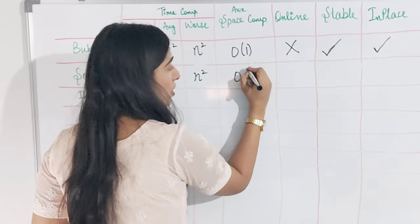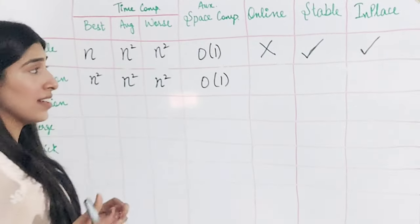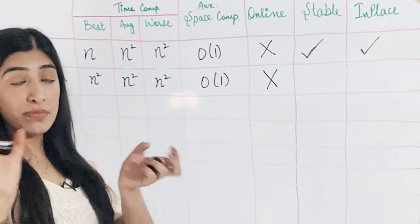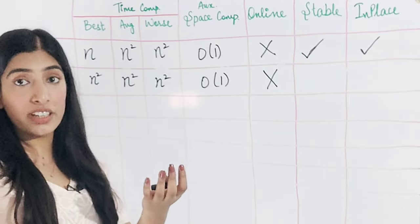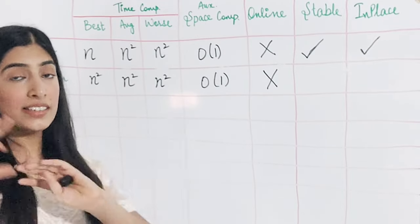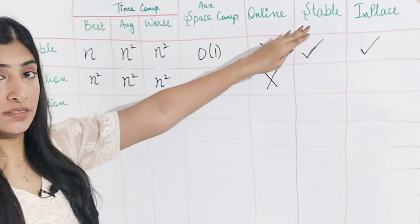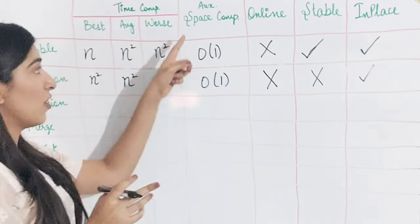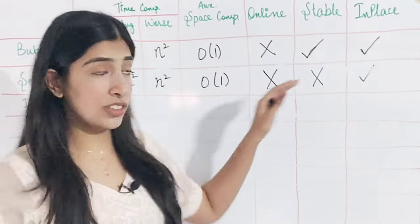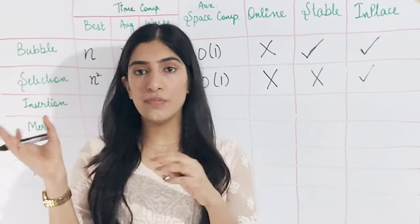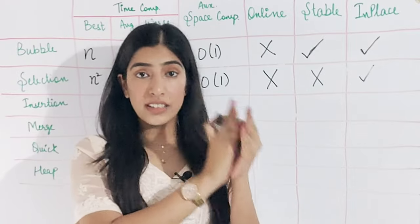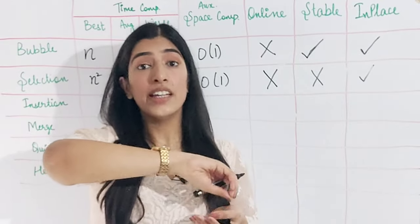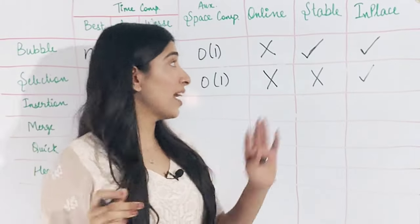Space complexity is O(1) — we are not using any extra space, just swapping in place. Is it online? No, because if we keep adding elements it will get disturbed since we are maintaining two sub-arrays: sorted and not sorted. Is it stable? No, it is not. When we put the minimum element to the first place, the element that was there gets swapped to a random position — we are not swapping adjacent elements here. The element could be swapped to a completely random position, which is why it is not stable.